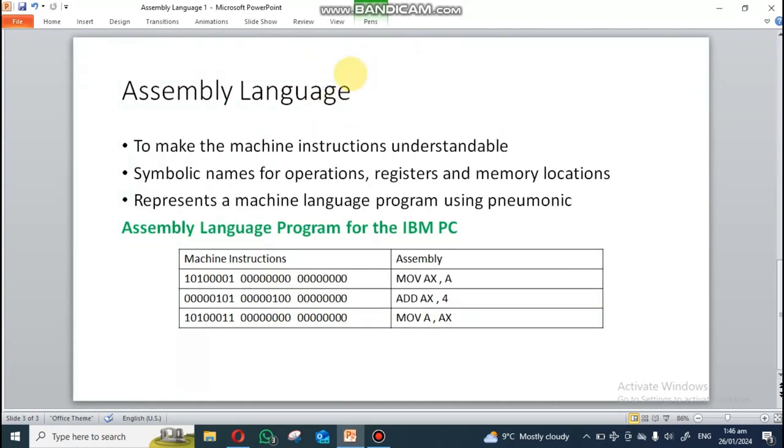On the other hand, if you see assembly language, assembly language is simply an easier way to remember instructions. If you see the machine language, it was pretty much difficult. Here, our aim is to make machine instructions understandable. Apart from that, we are using symbolic names for instructions, operations, registers, and memory locations.